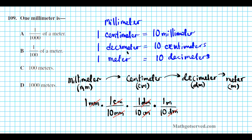That's exactly what we want. We also have to multiply the numbers. Multiplying the numerator horizontally: 1 times 1 times 1 is 1. The denominator: 10 times 10 times 10 is 1,000. The unit is meters. So one millimeter is one one-thousandth of a meter. Option letter A.